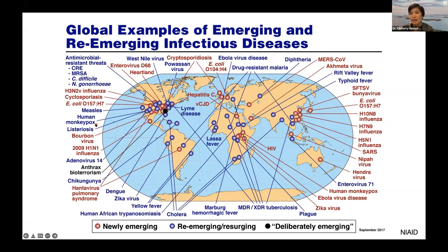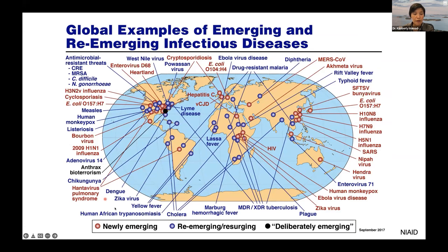Even before COVID hit the scene, there were still a lot of infectious diseases that were of great importance. This is a map from the National Institutes of Health from 2017 showing basically all the diseases that were of concern to them. Some are new, some are reemerging, and some are actually even deliberately released. Our work has focused on a lot of the flaviviruses — things like dengue, Zika, yellow fever, as well as Ebola and chikungunya.